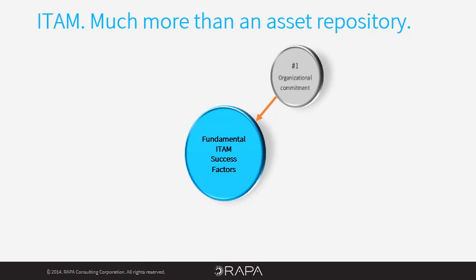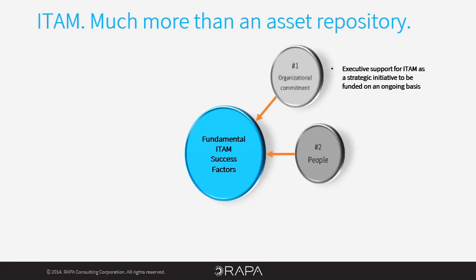Number one: organizational commitment. Because IT asset management is dependent on cooperation from cross-functional stakeholders and their frontline resources, it will not succeed without executive support as a strategic initiative through executive mandate and ongoing funding. Number two: ITAM requires process, but process does not write, manage, or score itself. People do. People set and enforce policies, processes, and procedures. People manage the related activities and people are held accountable for results. ITAM cannot succeed without the commitment of your people.